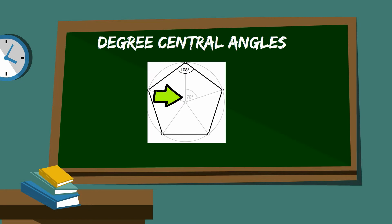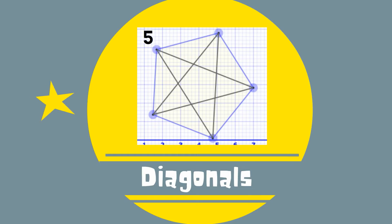The measure of the central angle of a pentagon equals 360 divided by 5 which is 72 degrees. A pentagon has 5 diagonals. You can find the number of diagonals of a pentagon.